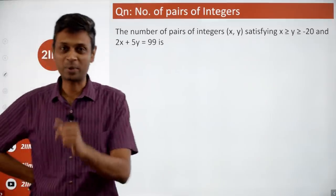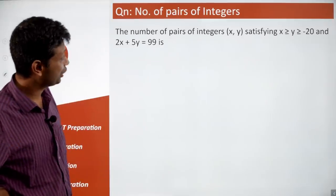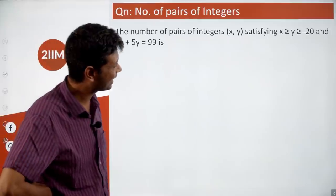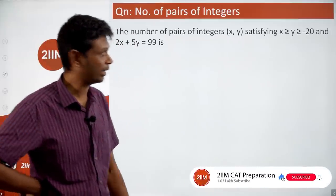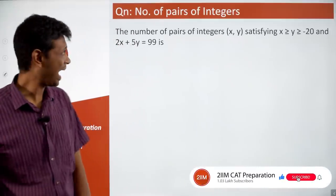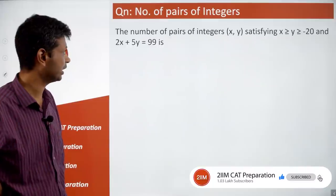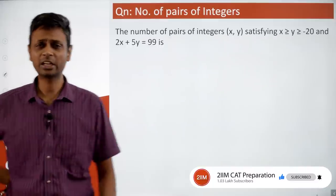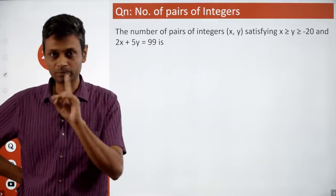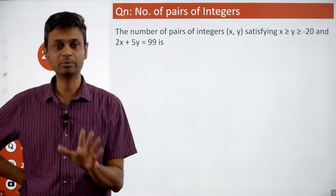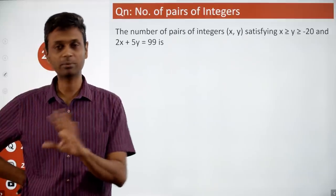The number of pairs of integers (x, y) satisfying x ≥ y ≥ −20 and 2x + 5y = 99. For these kinds of questions, find one solution and then build from there.